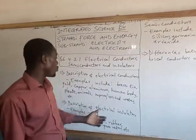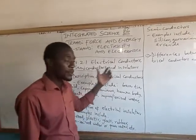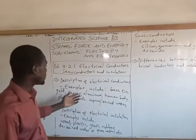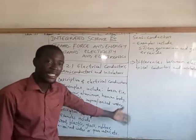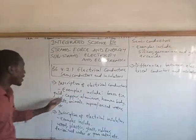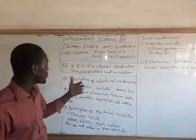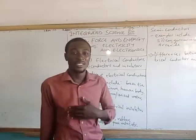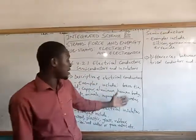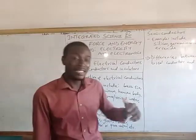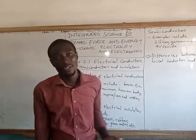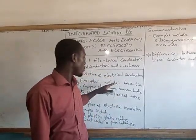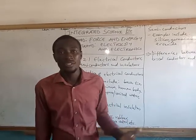Now we want to know some examples of these electrical conductors. We have brass, tin, gold, copper, aluminum, human body, animals, and impure or ionized water. Why am I mentioning all these things? In general, all metals are electrical conductors. But it is not only metals that can conduct electricity.